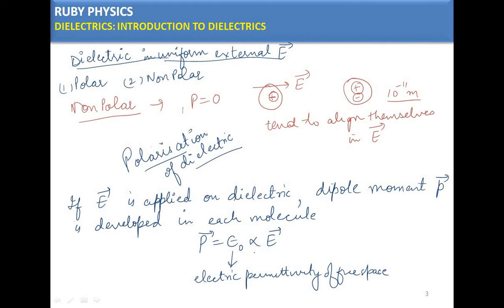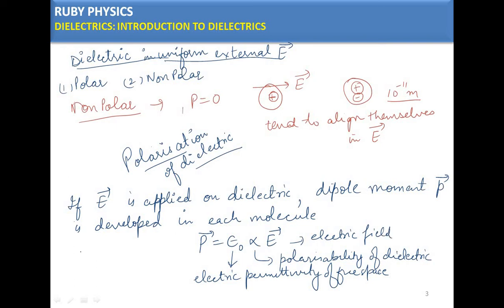Alpha, α, is called the polarizability of the dielectric. It is a proportionality constant. Alpha has dimensions of volume, and its range is approximately 10⁻²⁹ to 10⁻³⁰ meter cube.